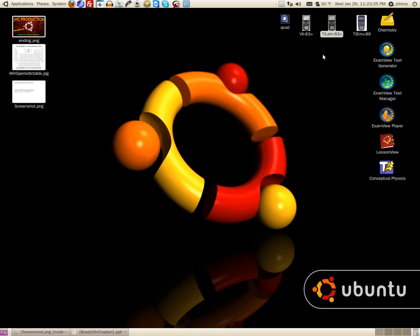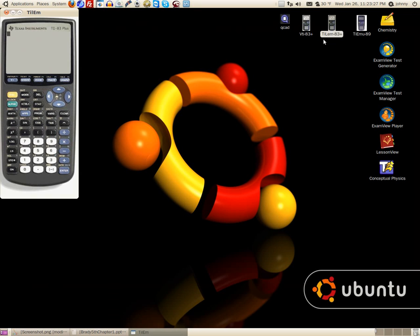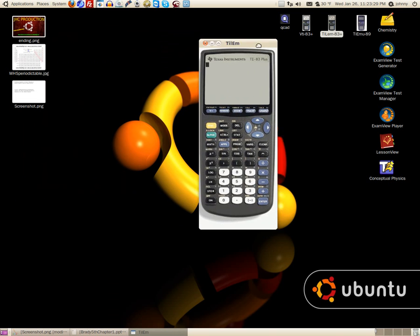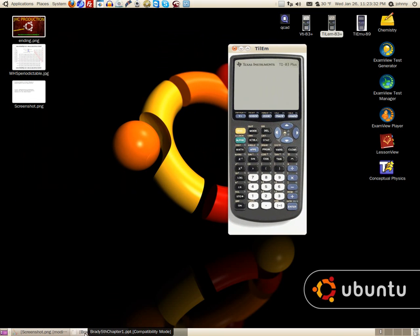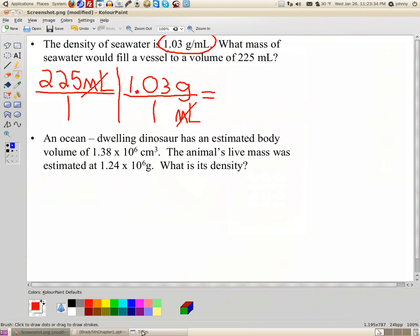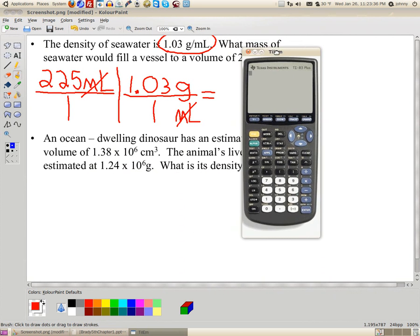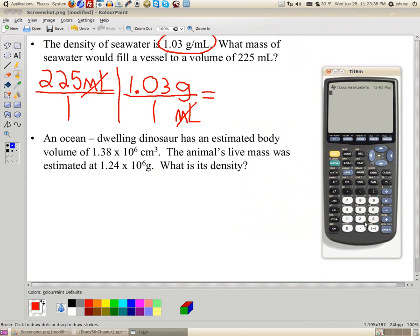I'm going to use my TI-83 plus on my Linux machine, and my Linux machine has a TI-LEM on it. So, that's what I'm running, if you're wondering. Okay. So, I'm going to punch this in. I have 225 times 1.03. Okay. I'm going to hit enter. Now, notice that there is not another number down here to divide by, because I would be dividing by 1. So, this is my answer.